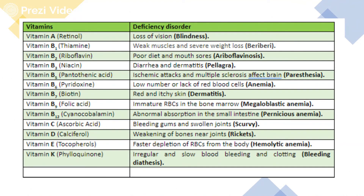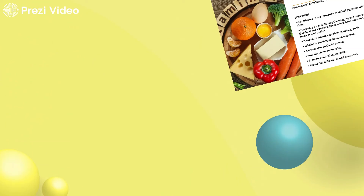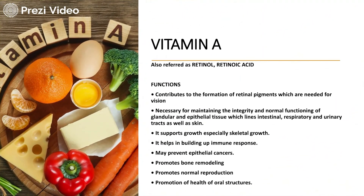Here is the list of all the vitamins and their deficiency disorders. For example, vitamin A deficiency causes blindness and loss of vision. All these vitamin requirements are very much needed. Vitamin A is generally referred to as retinol or retinoic acid. It contributes to the formation of retinal pigments needed for vision. It is necessary for maintaining the integrity and normal functioning of glands and epithelial tissues, and it supports skeletal tissue.